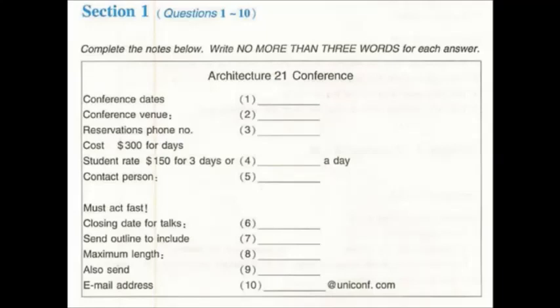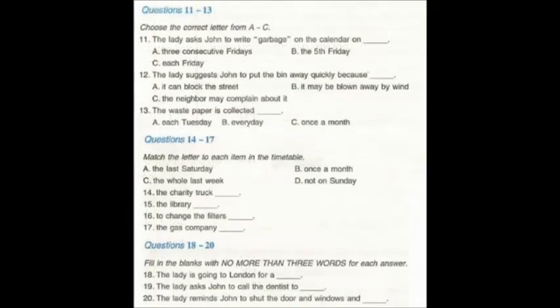Section two. In this section, you'll hear a message left to John on how to look after the house. First, you have some time to look at questions eleven to twenty. Now, listen carefully to the message and answer questions eleven to twenty. Hello, John. Welcome to the house. I'm really pleased that you can be here to look after my house while I'm away. Here are some things you need to know about the house. Important stuff like when the garbage is collected. In fact, let's start with the garbage, which is collected on Friday.